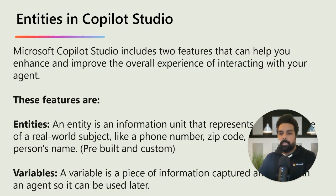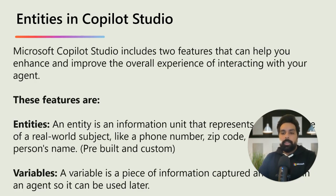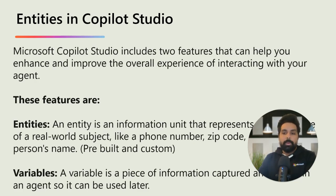A key aspect of natural language understanding is to identify the entity being used in that user dialogue. So when they ask that the gift card is not working, it should redirect to the right entity to take the conversation ahead. Think of an entity as an information unit that represents a certain type of real-world subject such as phone number, postcode, city and so on. Microsoft Copilot Studio comes with a set of pre-built entities out of the box representing the most used information in real-world dialogue such as age, color, and number. This knowledge allows the agent to recognize relevant information from the user's input and save it for further use.